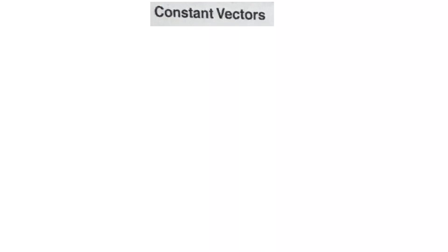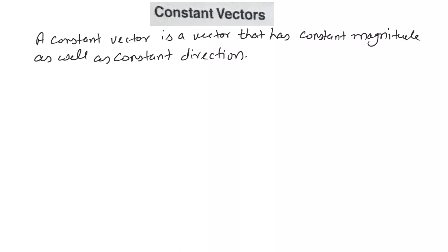A constant vector is a vector that has constant magnitude as well as constant direction. This is the definition — it has constant magnitude as well as constant direction. Both have to be constant: magnitude as well as direction. Only then we can say that a vector is a constant vector.